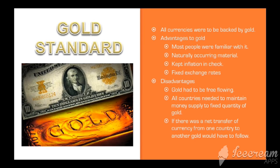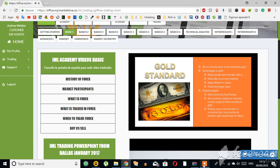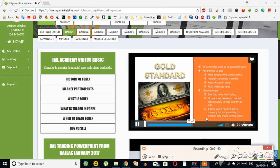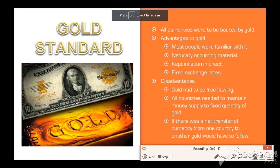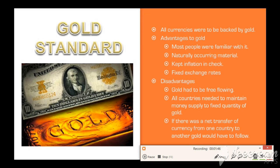After World War I, many of the countries came back together to pick up the pieces of their currencies. They all agreed on the gold standard, where their currencies would all be backed by gold. For example, one dollar would equal one half ounce of gold. This was desirable because it meant that people no longer had to carry their gold around with them. However, the problem was that if there was a net transfer of currency from one country to another, then the gold would also have to follow, which in practice did not happen.